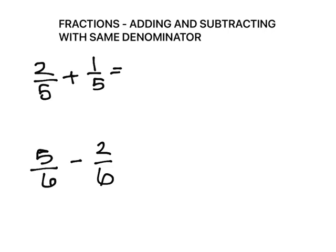I have two examples here on the board and I'm just going to go through the first one. The first one is two-fifths plus one-fifth. As I said, we keep that bottom number.